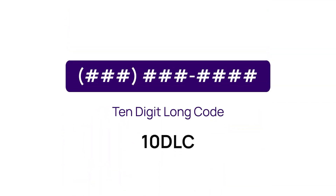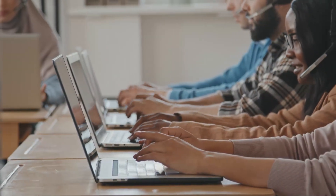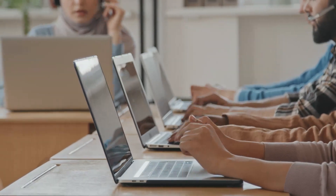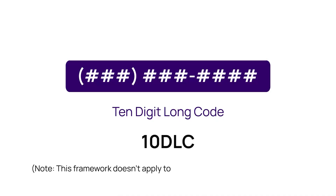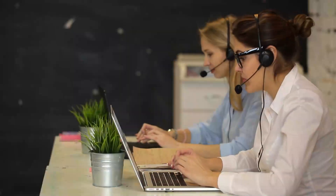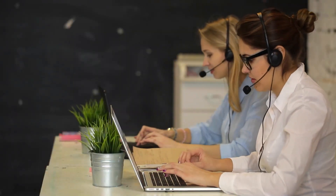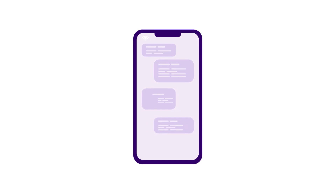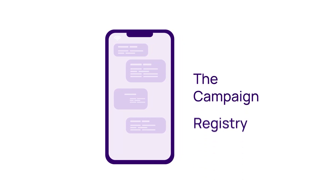A2P 10DLC uses a standard 10-digit long code phone number, acting as a bridge between companies and customers for a more personalized and engaging messaging experience. This framework doesn't apply to US toll-free and short code numbers. Companies — US and non-US-based — sending text messages such as alerts, reminders, and promotional texts to US-based clients must register their phone numbers, brands, and campaigns with a third-party entity called the Campaign Registry, also known as TCR.